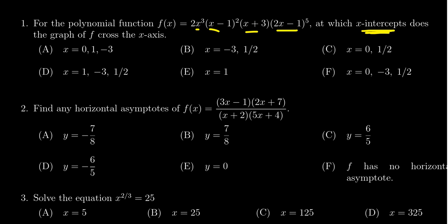But it's asking which of these x-intercepts will cross the x-axis. If you're crossing the x-axis, that means you have an odd multiplicity. So we look at the exponents here. You have a 3 right here. You have a 1 right there. And you have a 5.